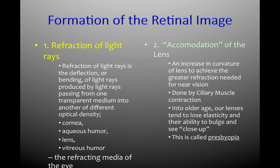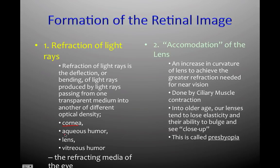To form a retinal image, a few things have to happen. First, refraction of light occurs when light rays go from one medium to a different medium — a medium being anything a substance passes through, such as air, semi-solid fluid, or liquid. Within the eye, the cornea, the aqueous humor, the lens itself, and the vitreous humor are all different substances that light rays have to pass through to eventually strike the retina.